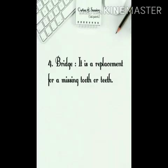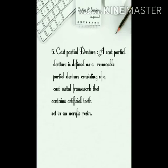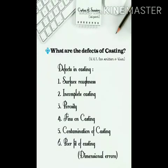4. Bridge — it is a replacement for a missing tooth or teeth. 5. Cast partial denture — a cast partial denture is defined as a removable partial denture consisting of a cast metal framework that contains artificial teeth set in an acrylic resin.